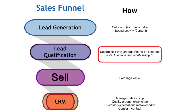Then you have the actual selling — the exchange of the product. After that comes Customer Relationship Management, or CRM. In this phase you manage your relationship with the customers you now have. You keep it going with a quality product experience — customer expectations must be met or exceeded if you want to keep people as customers and start creating loyalty.